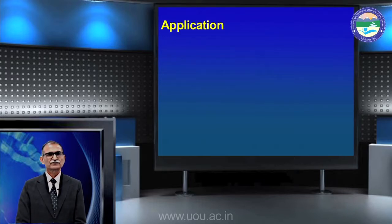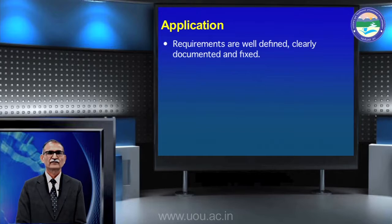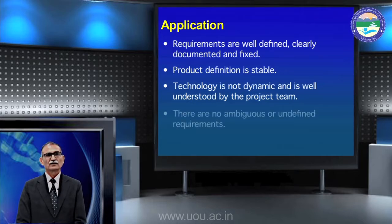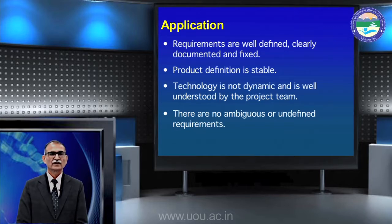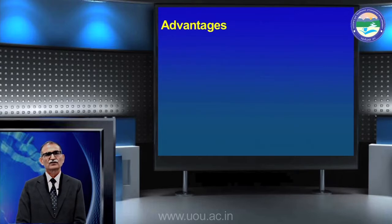The best use of the V model is when requirements are well defined, clearly documented, and fixed. In a continuously changing environment, this model fails. Your product definition should remain stable, the technology should be fixed and not changed daily, and no requirements should be ambiguous or undefined. Also, if the project is small, this is a very suitable model for the software development life cycle.